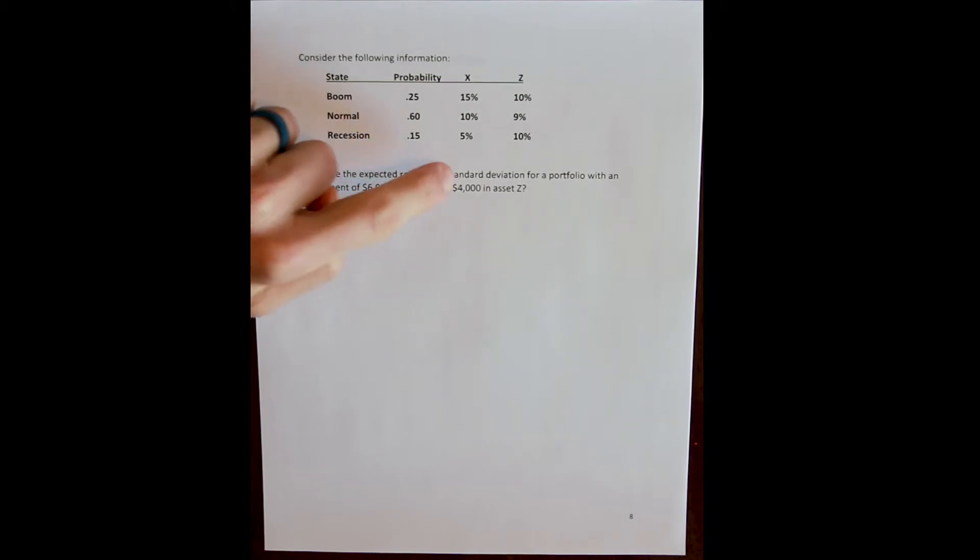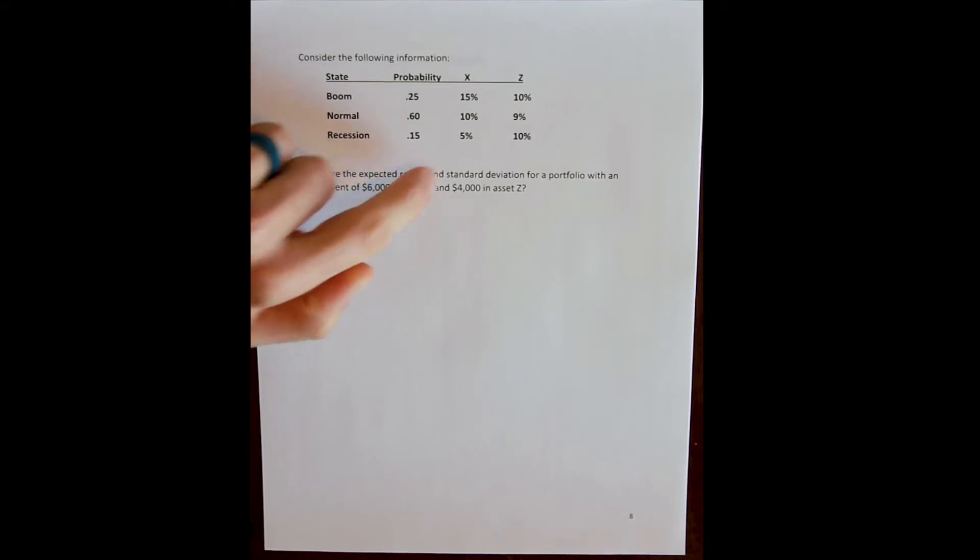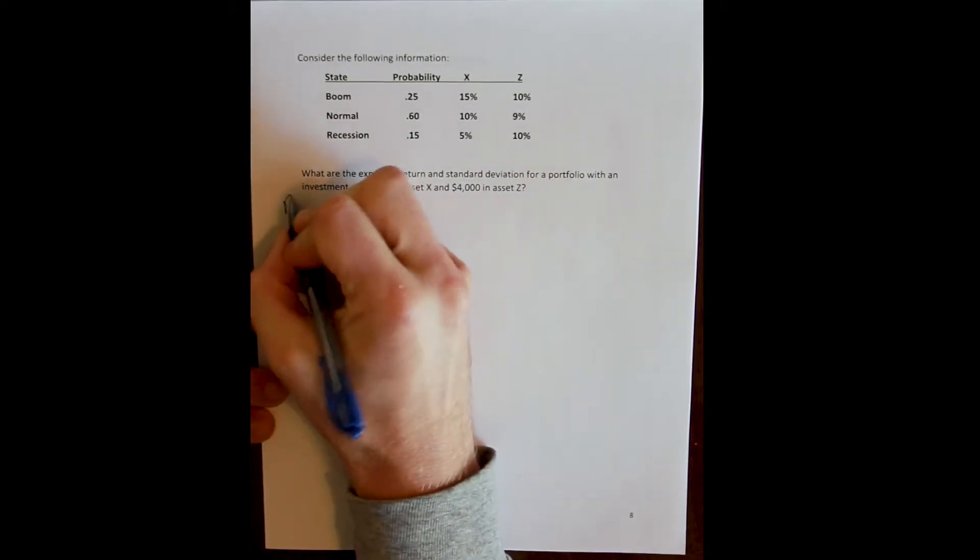Let's work one more portfolio example where we've got a world with three states of the future and two assets. We want to know the expected return and standard deviation — the risk and return — for a portfolio where we have six thousand dollars in asset X and four thousand in asset Z. We'll first start by calculating the portfolio weights.